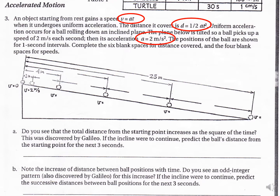We have an object starting from rest that is gaining speed: v equals acceleration times time. While undergoing this uniform acceleration, it covers a distance of one-half a·t². This uniform acceleration occurs for a ball rolling down an incline, and it tells us we're picking up speed at a rate of 2 meters per second every second — so our acceleration is 2 meters per second squared. The positions of the ball are shown for one-second intervals. Complete the six blank spaces for distance covered and the four for speed.